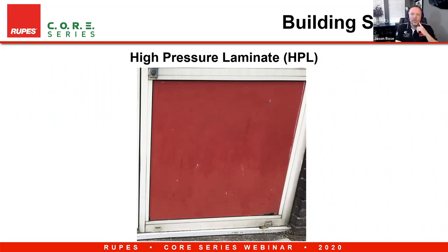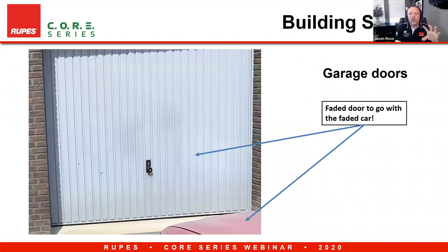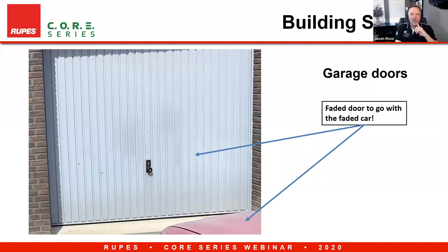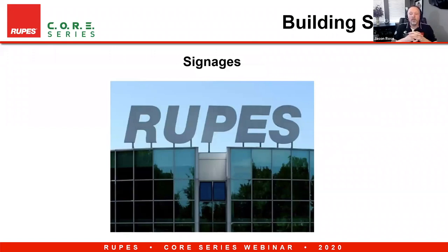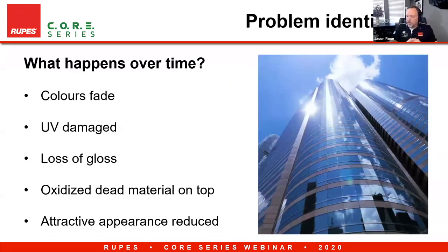Here's a very faded, dull garage door that has faded over time. In the lower right corner of this picture, there's also a faded car — they appear to have aged together, so there's an opportunity to renovate both. As for signage, this is the RUPES headquarters in Italy, but we're talking about many different shapes and sizes of commercial building signage — lots of opportunities to shine those up.